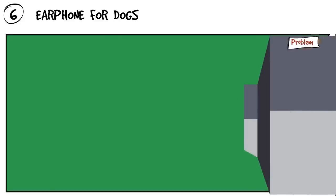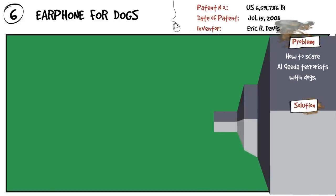Earphone for dogs. How to scare Al-Qaeda terrorists with dogs. Earphone for dogs that can receive verbal instructions remotely.